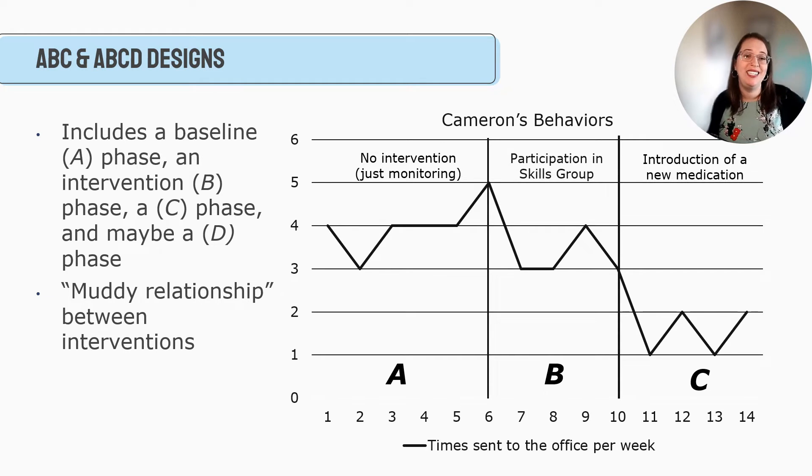And so ABC and ABCD designs are vulnerable to things like carryover effects. Sometimes our clients learn things or grow or change in one intervention, and that's enough to carry over into the next one. We also get things like history. Maybe Cameron just is maturing. 14 weeks is a long time in the life of an adolescent or an elementary age student. Maybe just some maturity was happening or you can get some order effects as well.